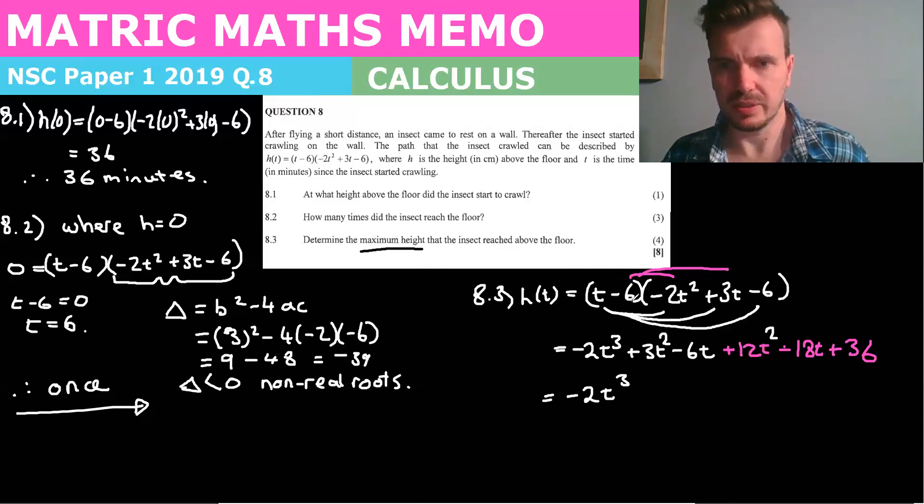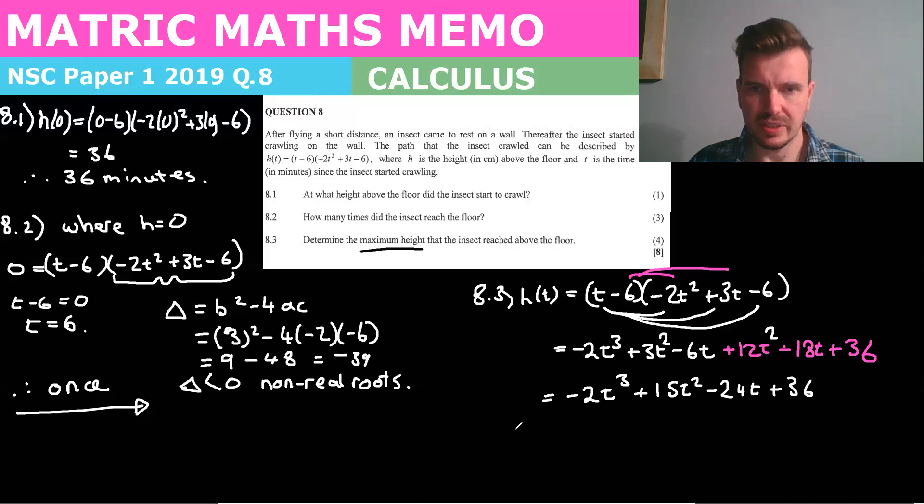I need to put the squares in, didn't I? Plus three t squared. I was just saying, don't make a mistake. And plus 12 t squared. Let's just make sure I didn't make any other errors. 18 T is right. Negative six T is right. Okay. Plus 15 t squared minus 24 T plus 36. Okay. Now that's H of T. And now we simply set H dash of T because that is the derivative. And we make that equal to zero later. Negative six t squared plus 30 T minus 24.